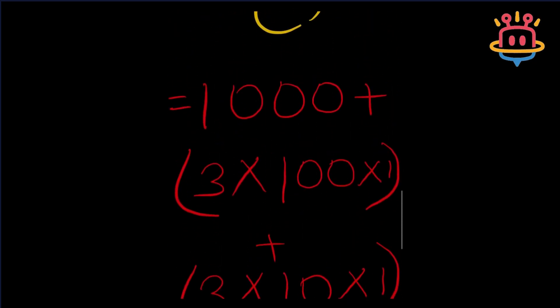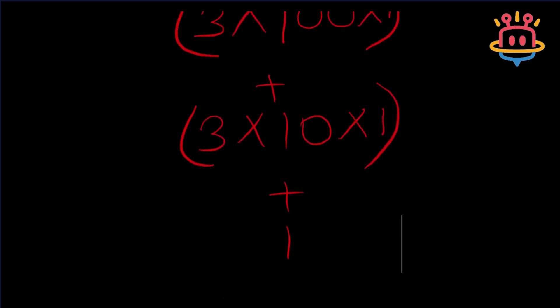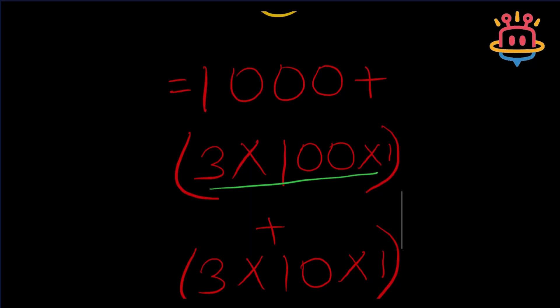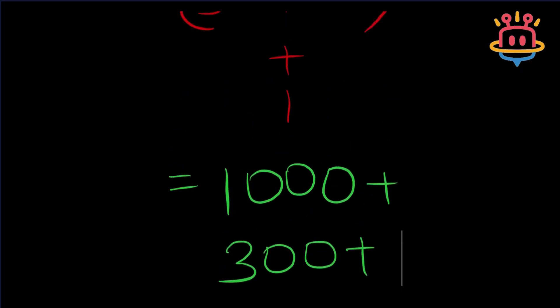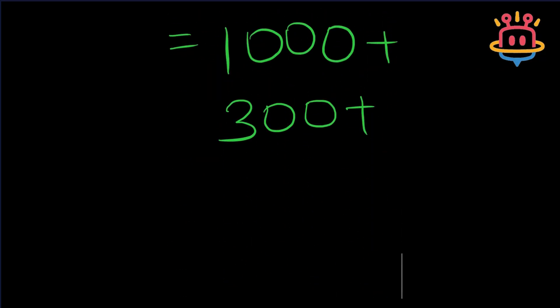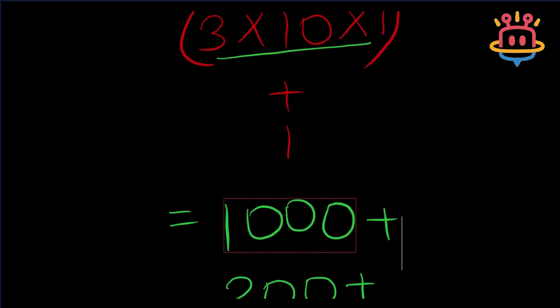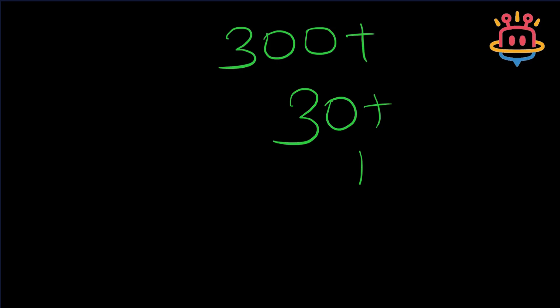So we have 1000 first. Then we have 3 into 100 into 1, that is simply 300. Plus we have 3 into 10 into 1, that is simply 30. And finally we have 1. I think now we are ready to get the final answer.